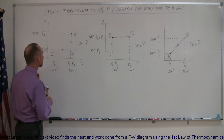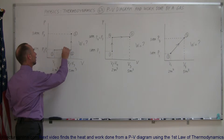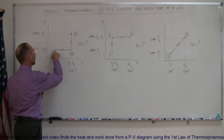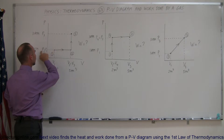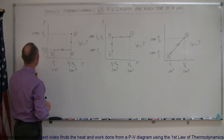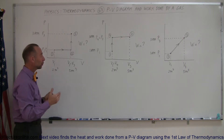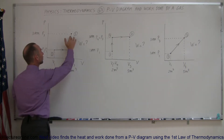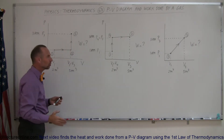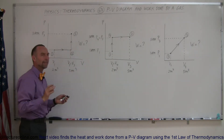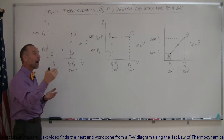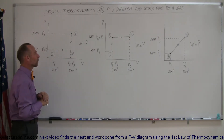On the PV diagram you place points which represent the state of a gas. For example, a gas will start at state one with pressure one and volume one — in this case two cubic meters and one atmosphere — and then through a series of changes it'll end up in a different state with a different volume and pressure. The question is how much work was done by the gas — it could be a negative quantity if work is done on the gas, but that is a topic for later.